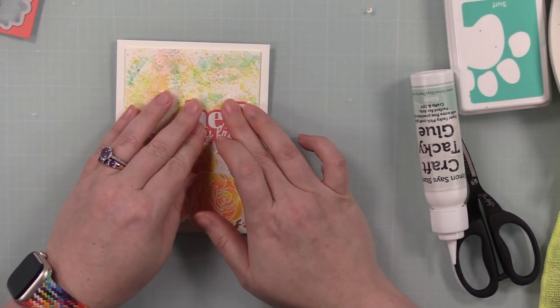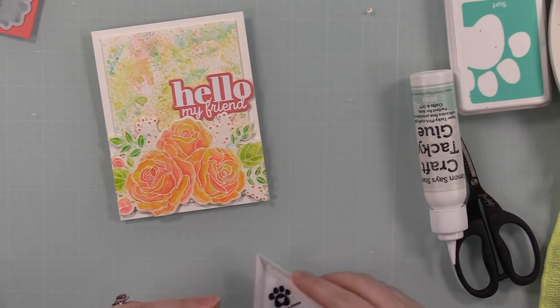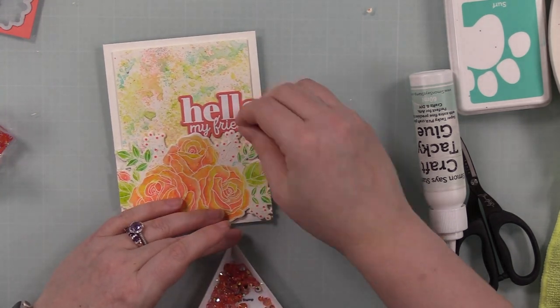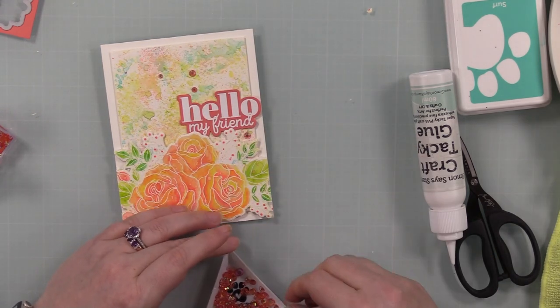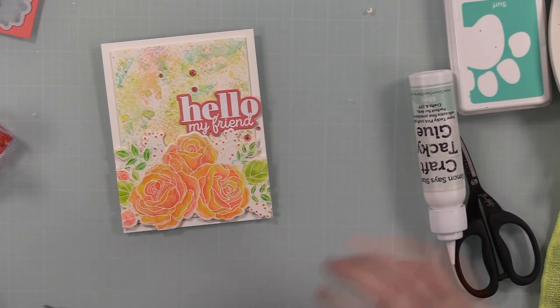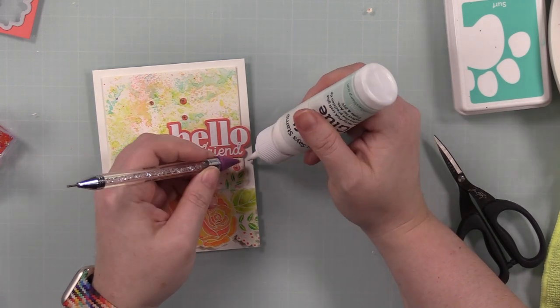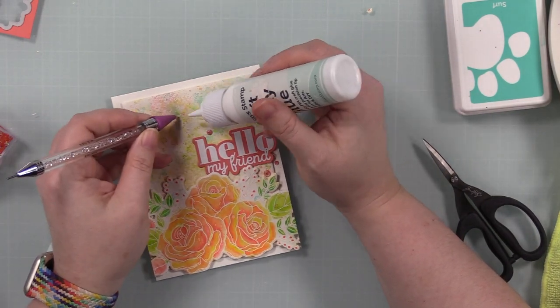Of course, I had some matching bling. It took me about two seconds going through my stash - this one's perfect. This is the Trinity Stamps Topaz Twinkle embellishment mix. I just put a few of those onto the card front and adhered them into place with little dabs of craft tacky glue. Once those are adhered, this card is complete.